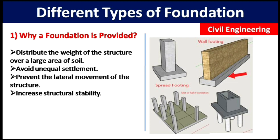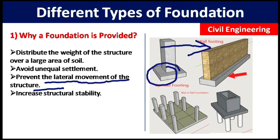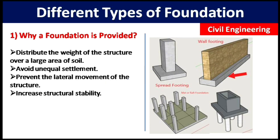The second point is: it avoids unequal settlement. If we do not provide a foundation below the column, that column may sink into the soil unevenly, causing unequal settlement and possibly collapsing the building. The third point is: it prevents the lateral movement of the structure — that is, side movement from one direction to another.